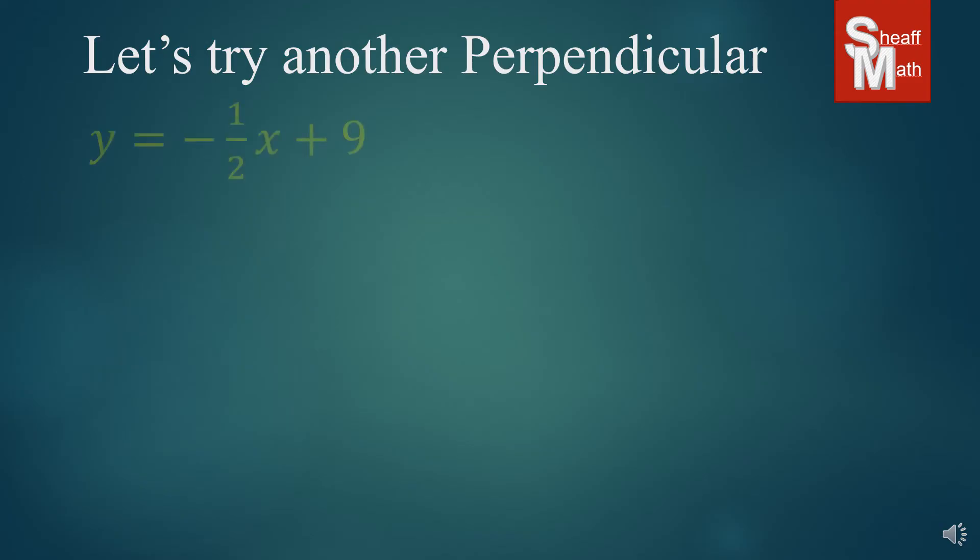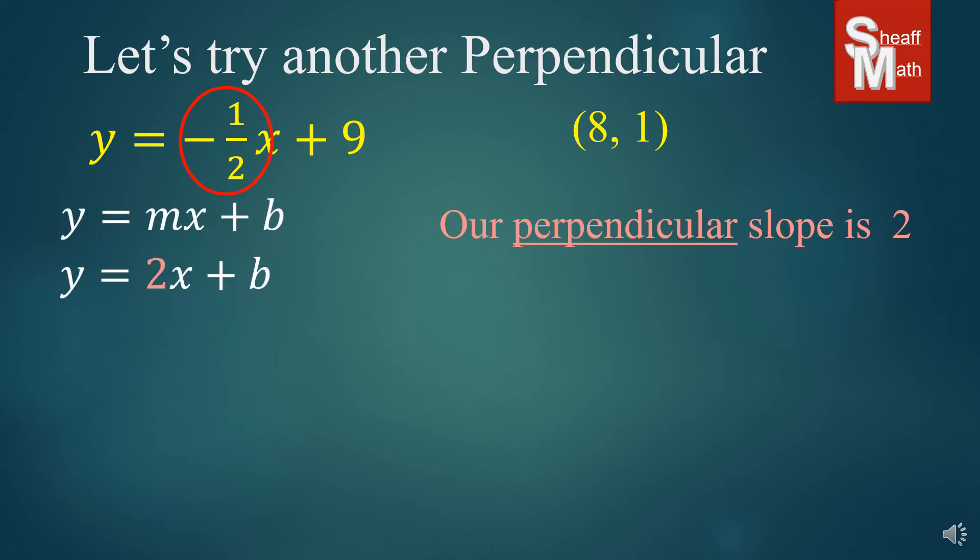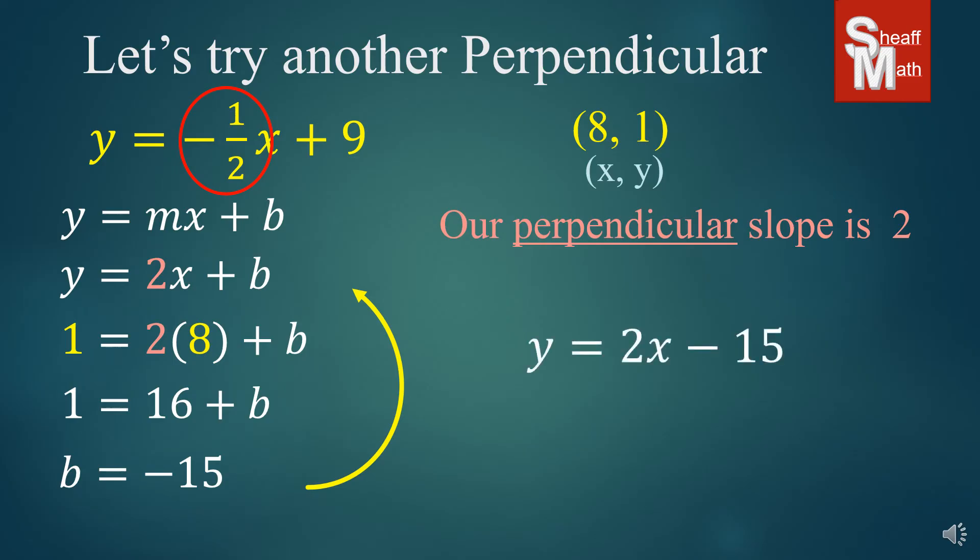Let's try another perpendicular. We have y equals negative 1 half x plus 9, and our point is 8, 1. So our perpendicular slope is the opposite reciprocal of negative 1 half, which is positive 2 over 1, which is positive 2. We put 2 in for the m, and then we put 8 and 1 in for the x and y. We simplify first and then solve for b. And that's negative 15. We take our negative 15, put it in for the b. And there is our answer, y equals 2x minus 15.